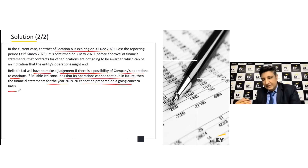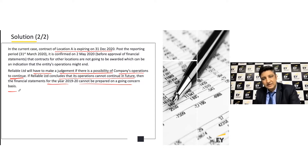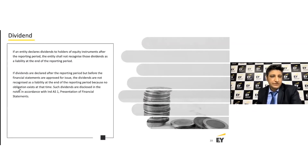All these special cases — be it breach of long-term loan conditions, going concern issues, or payment of dividend — are coming through from an Ind AS 1 perspective. It is just that the references made for events after the reporting period specifically under Ind AS 10 are what we are trying to understand further. The final leg is about dividends: in case an entity declares a dividend after the reporting period, the entity shall not recognize those dividends as a liability at the end of the reporting period.